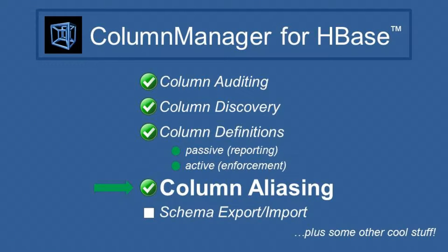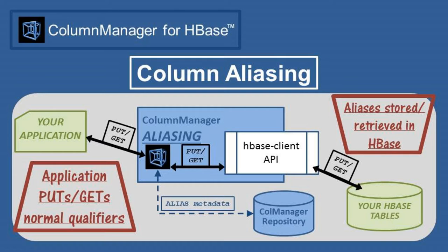Column aliasing borrows a technique employed in some legacy mainframe databases to conserve storage space, by substituting short column aliases in tables in place of full-length qualifiers. When enabled for a column family, the aliasing facility works invisibly to the developer, who continues to code applications using normal qualifiers, while Column Manager works in the background, swapping qualifiers and aliases appropriately during all put and get operations.